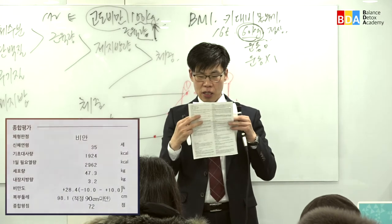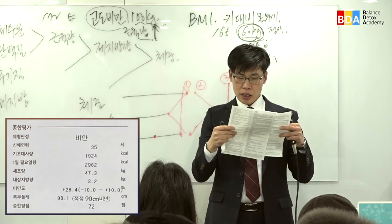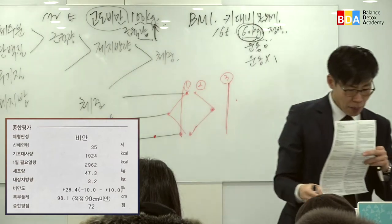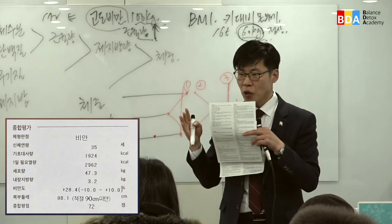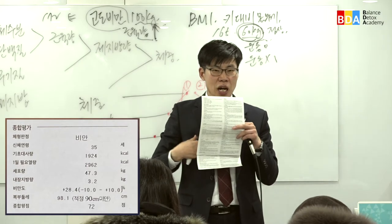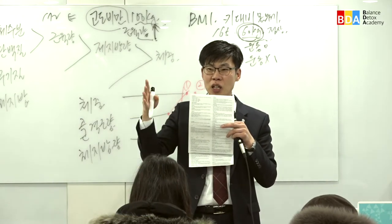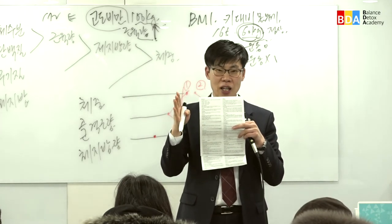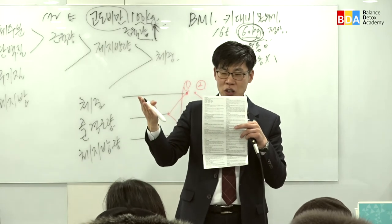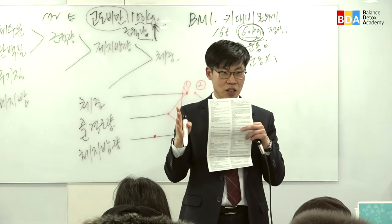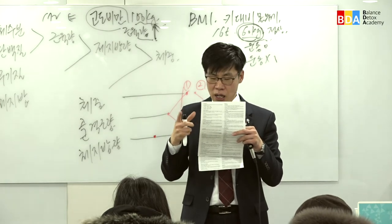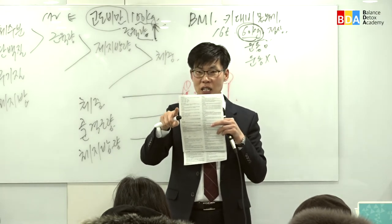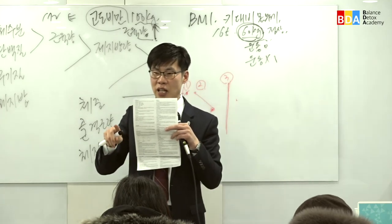오른쪽을 보시면 종합평가, 나이, 기초대사량이 있습니다. 어떤 분은 1500칼로리, 어떤 분은 1300칼로리, 1200칼로리로 나올 겁니다. 기초대사량은 움직임 없이 하루 종일 숨만 쉬고 있을 때 소모되는 칼로리입니다. 나이가 먹을수록 에너지 효율이 떨어지므로 기초대사량이 낮아지고, 젊은 사람들은 에너지 효율이 높아 기초대사량이 높습니다.